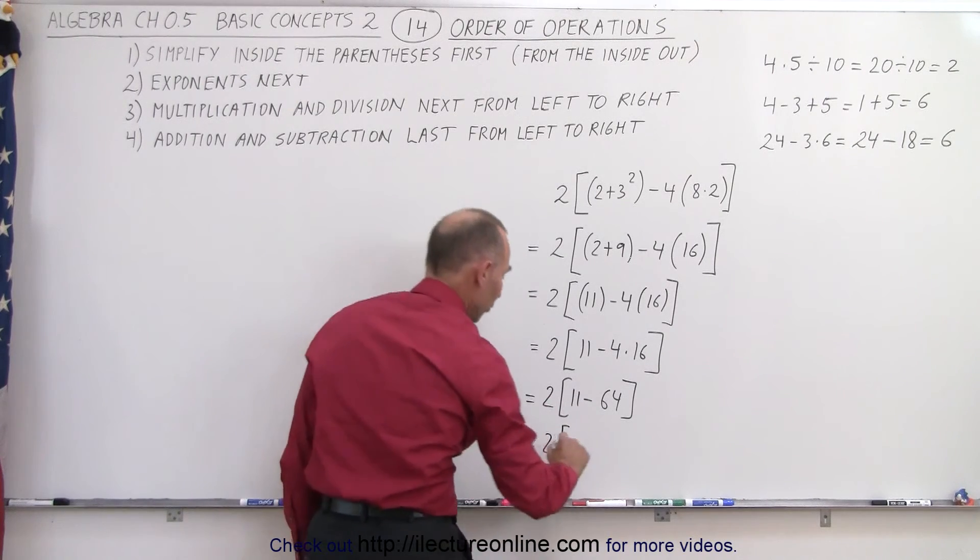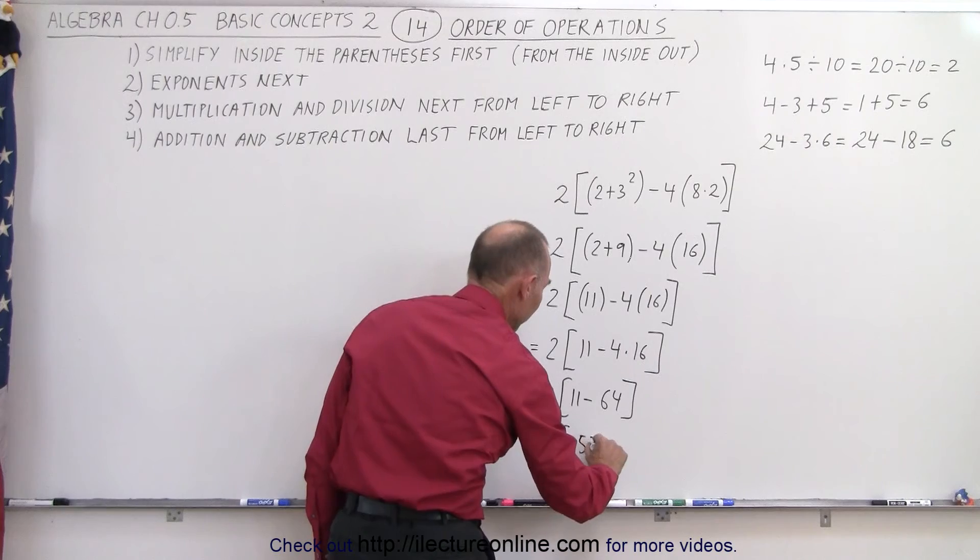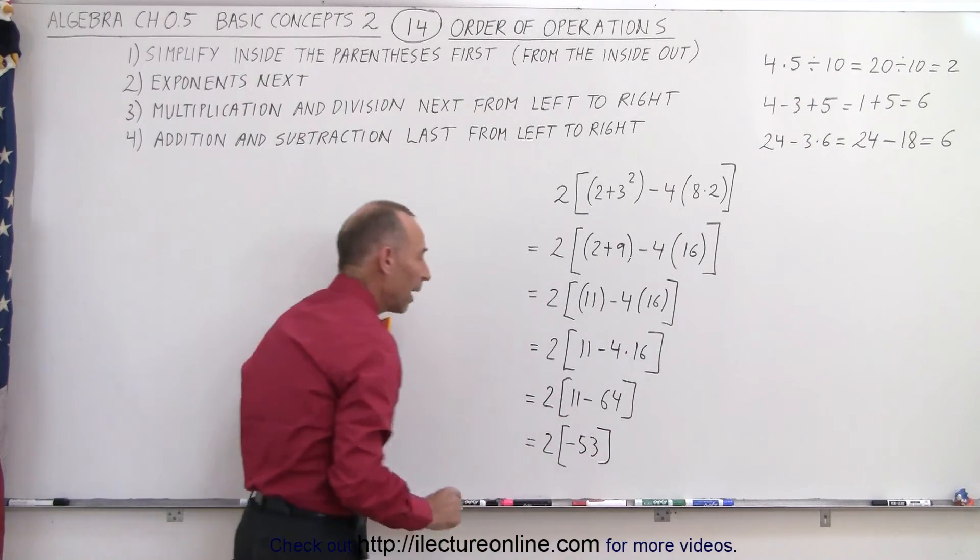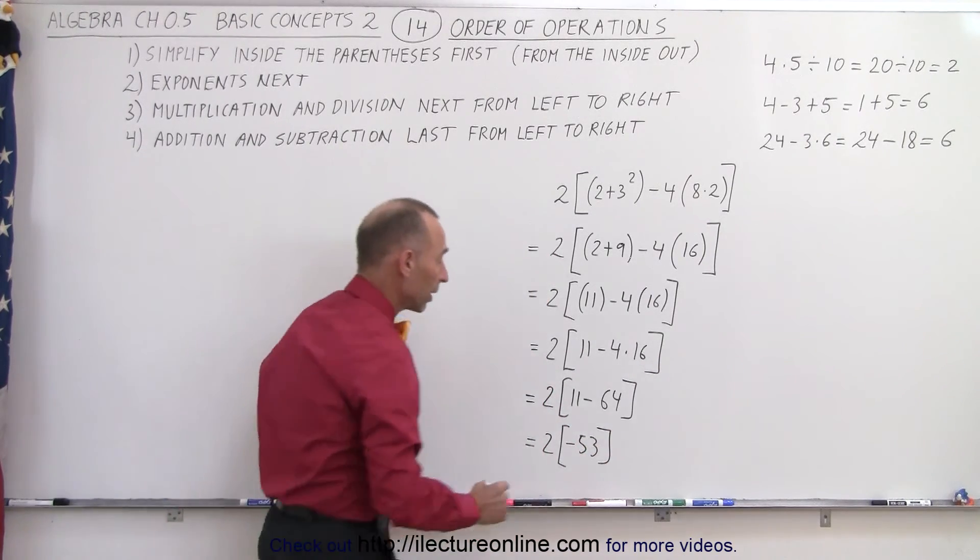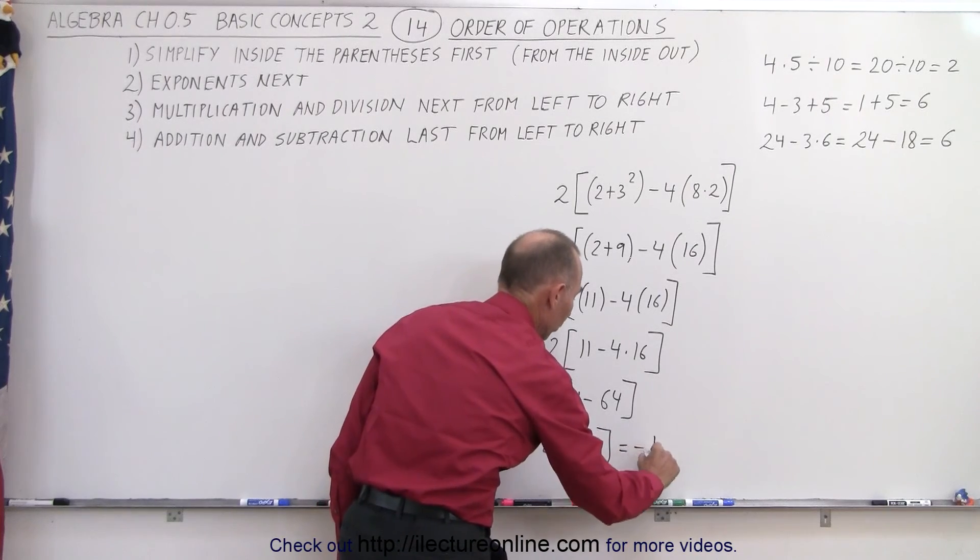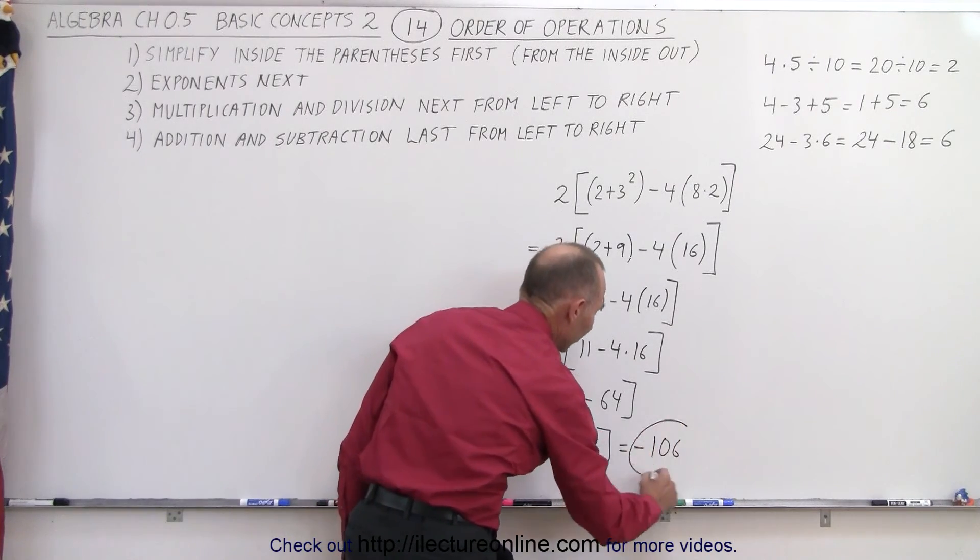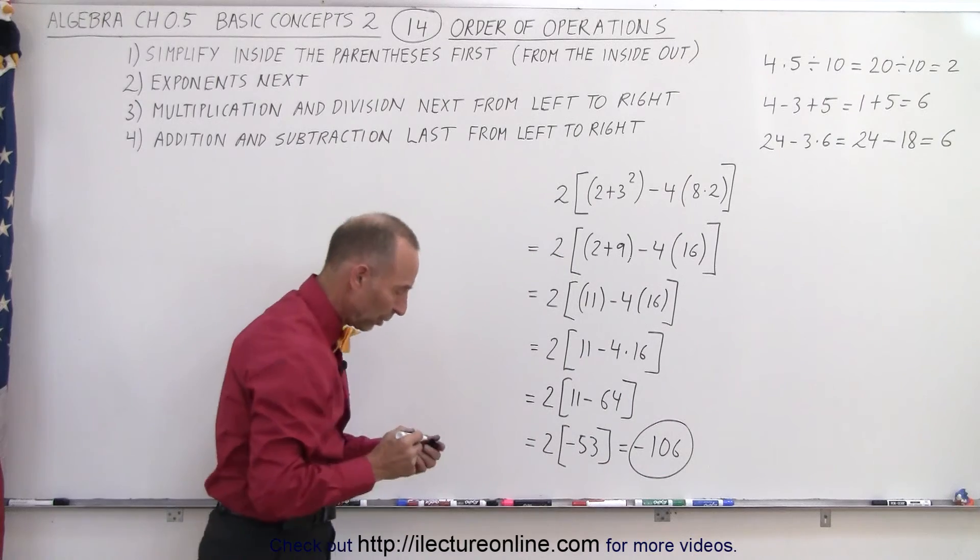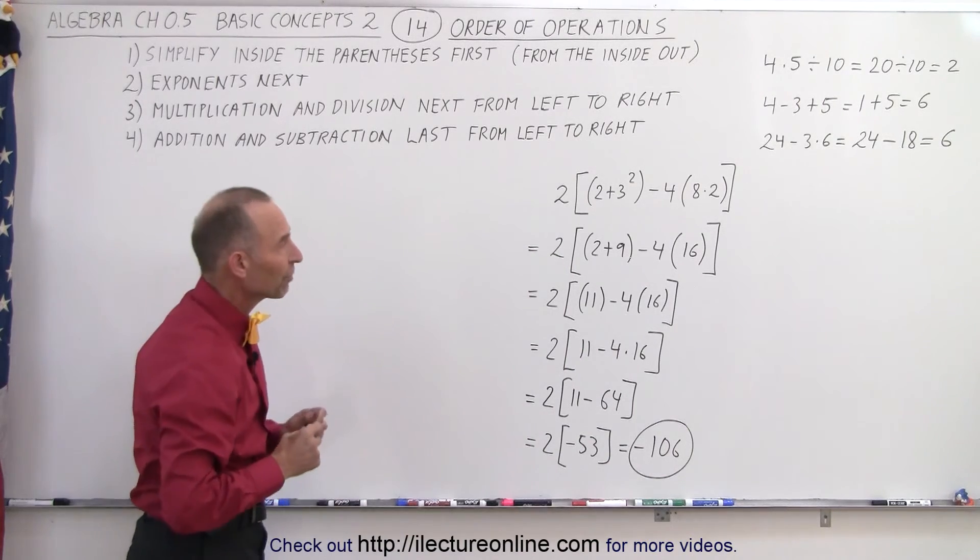So this would be equal to 2 times. 11 minus 64 is a minus 53. Now we have 2 times minus 53. That we can work out. This is equal to minus 106. And that is the final answer of this expression, the simplified form of the expression.